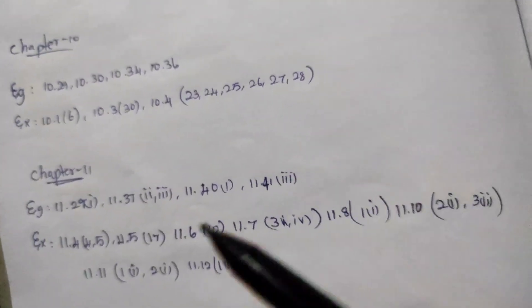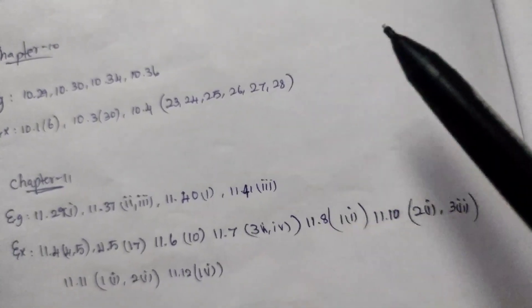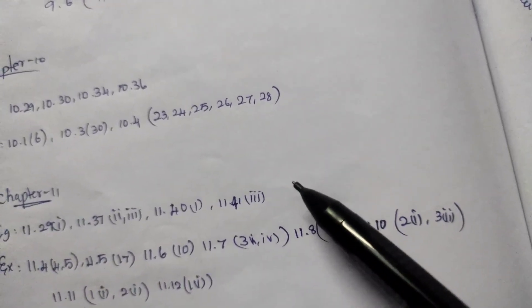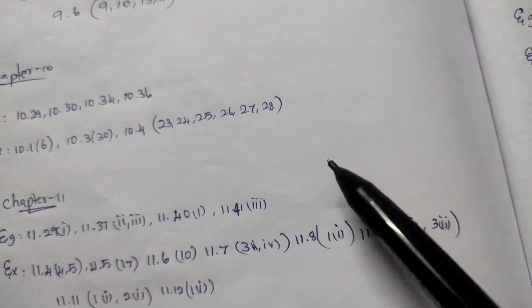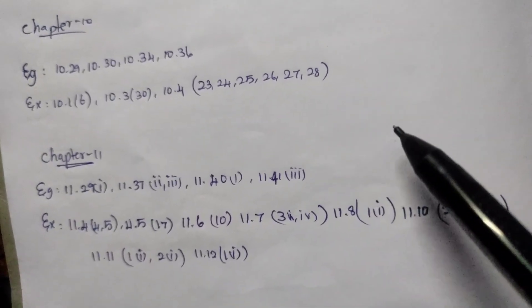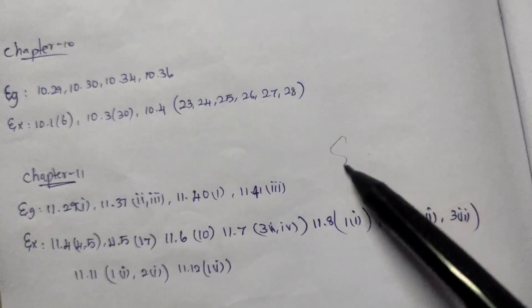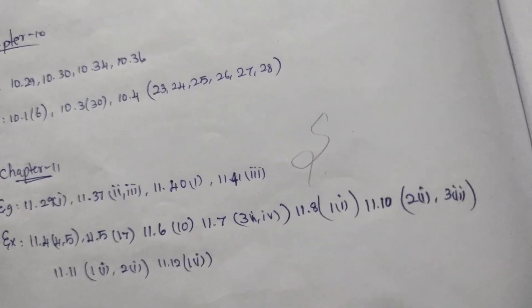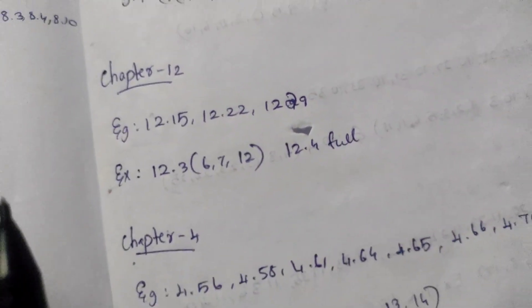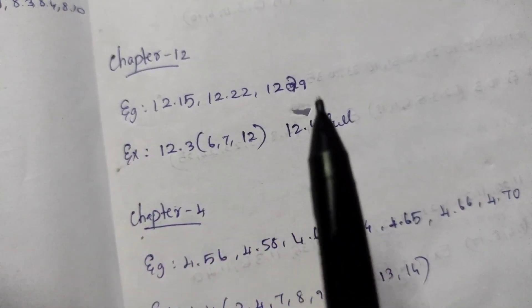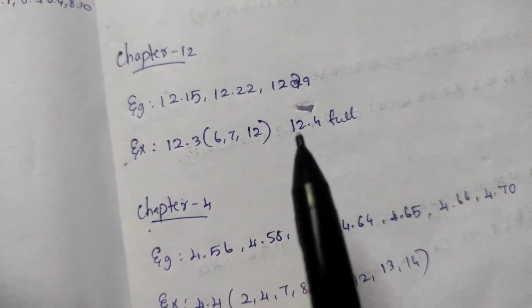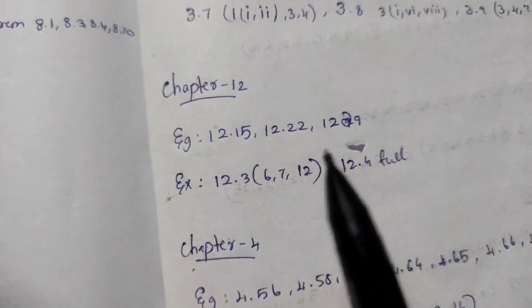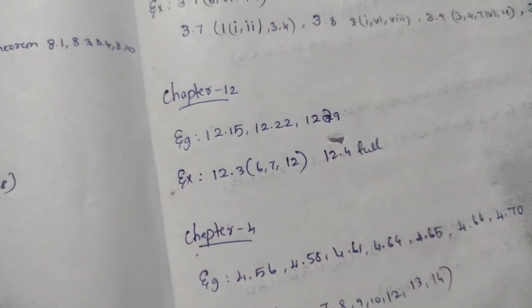Chapter 11.3. Example 10.3: 16, 27, 29, 22, 27, 28. Check out 10.3, 18.4, 17.4, 18.3: 27, 29. Example: 1.7, 25.7, 29.23. You can check XS 12.3: 6, 7, 12, and 12.4.